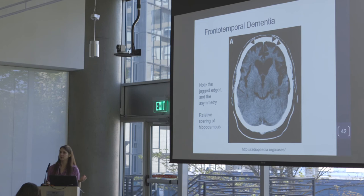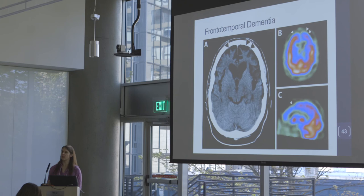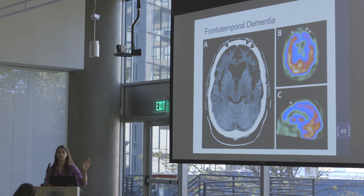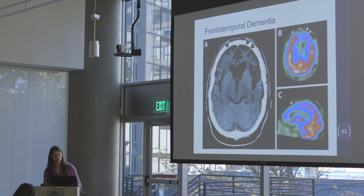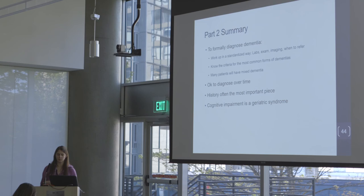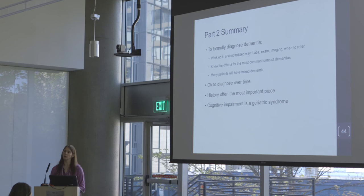On a PET scan for frontotemporal dementia, you're looking for loss of glucose signal — and here we see the frontal lobe is decreased and very asymmetric, correlating with the MRI image. To formally diagnose dementia, we want to work it up in a standardized way, know the criteria for the most common forms, recognize that people might have more than one thing, that it's okay to diagnose over time, and that the history is really important.